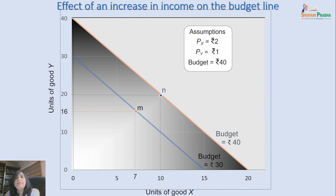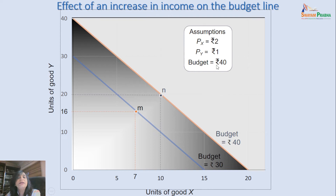What happens if there is an increase in money income? Continuing with the same example where the price of X is 2 rupees and Y is 1 rupee, if your money income increases from 30 to 40 rupees, the consumer can now buy more of X and Y with the same prices. This means the consumer has a greater ability to pay, and because of this increase in money income, the budget line will shift outward to the right.